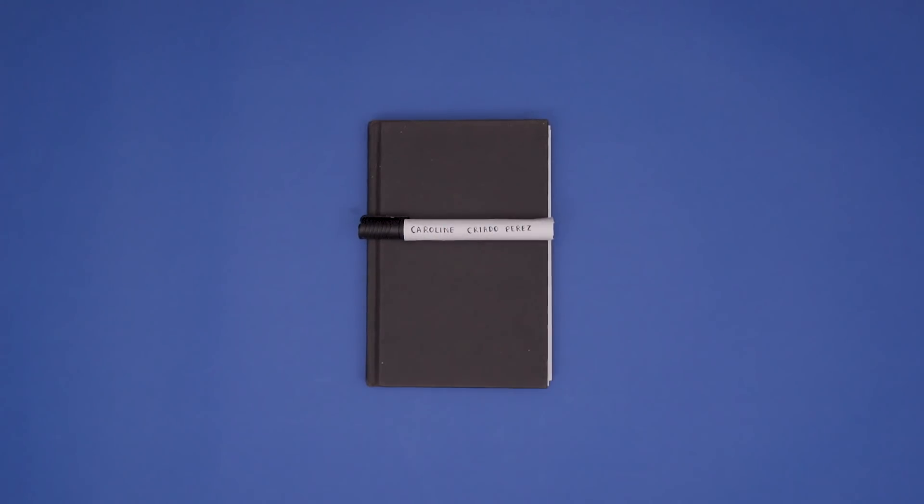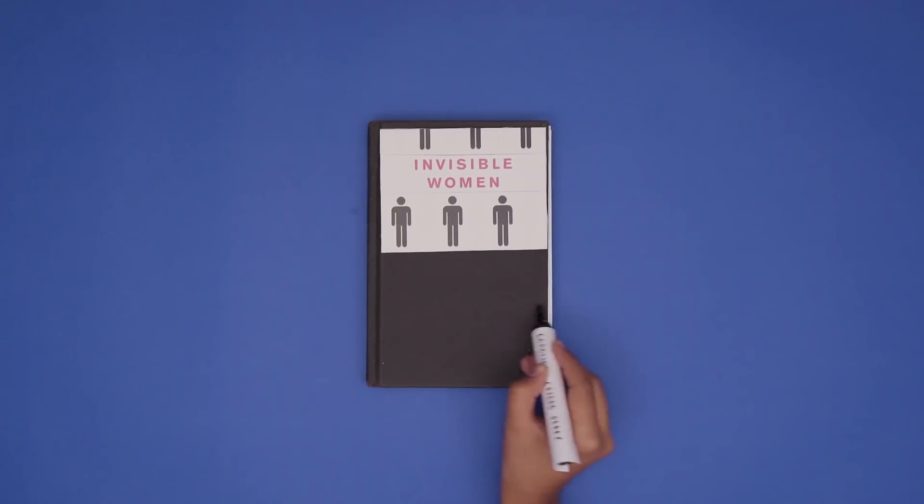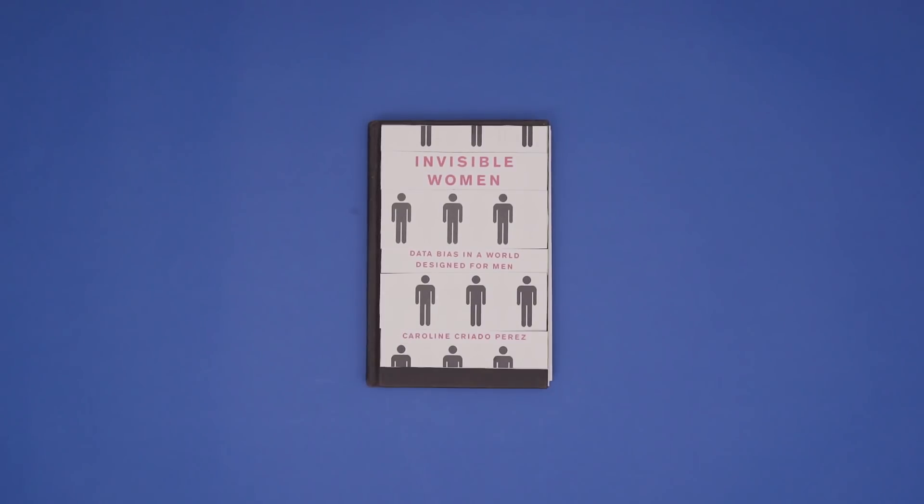Journalist Caroline Criado Perez, in her book Invisible Women, highlights how women are AWOL in almost all the data gathered in every field, leading to a world built for men.